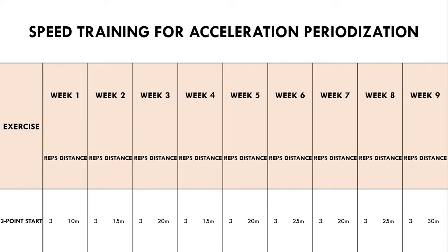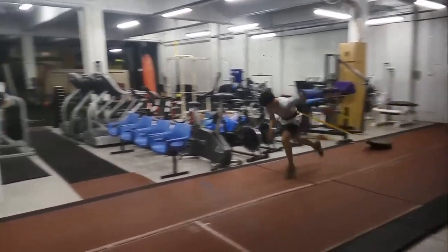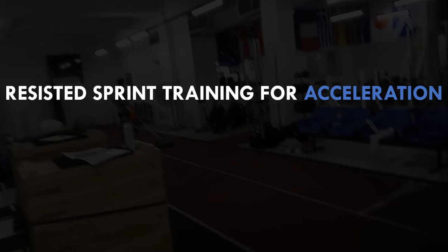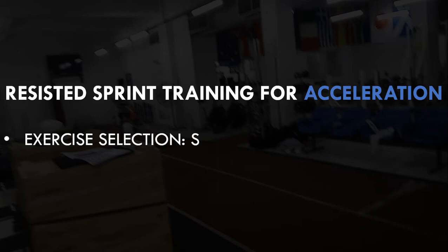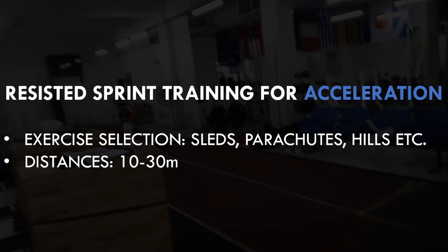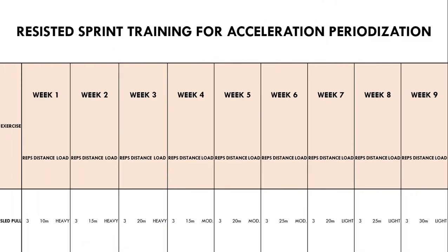The next most specific form of acceleration training is resisted sprinting. Resisted sprints will demand greater force production in a highly specific manner and will also reiterate the forward lean of the body and the high knee position. Resisted sprints can be performed using sleds, resisted rope devices, parachutes, or hills. Again, distances of 10 to 30 meters are best suited. This can be periodized by starting with shorter distances and heavier loads, transitioning to longer distances and lighter loads, building force production qualities first and slowly transferring them to faster running speeds. For example, a nine-week periodized program may look something like this.